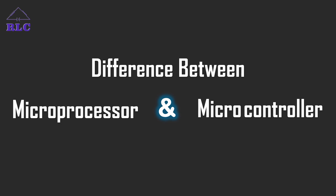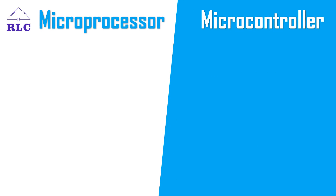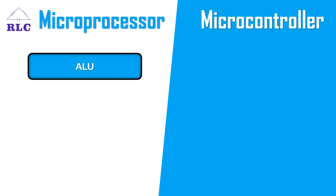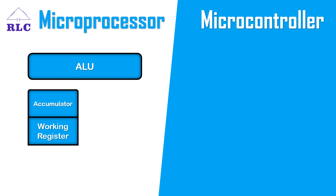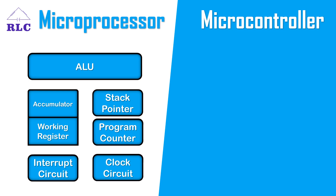The first difference between microprocessor and microcontroller: a microprocessor contains an arithmetic and logic unit (ALU), an accumulator and working registers which help in the operation of the ALU, a stack pointer, a program counter, interrupt circuits, and clock circuits. The details of these blocks will be studied in future videos.